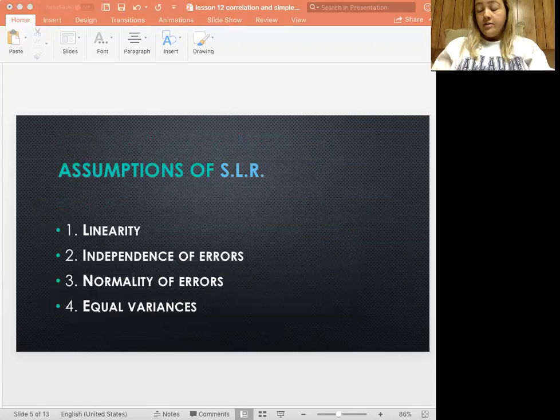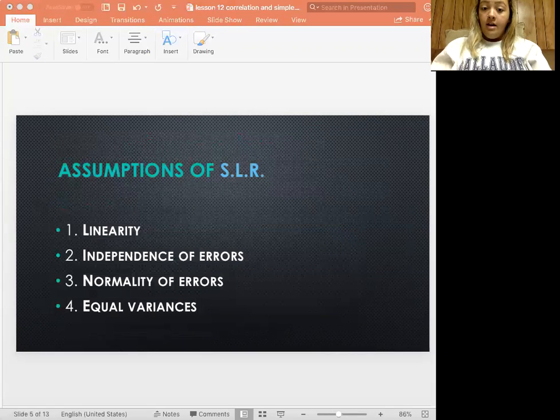The third one, normality of errors, you want to use your normal probability plot. And you can also look at the normal approximation histogram to make sure it's normally approximated. And if there is a normal approximation, normal curve there, then we can say that the errors are approximately normal. That's how you check that one.